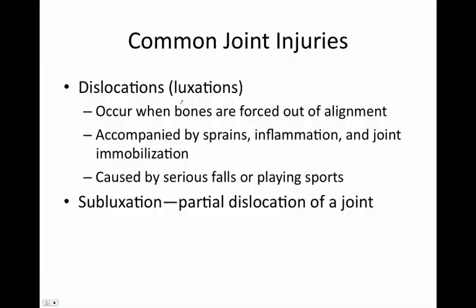Dislocations or luxations occur when bones are forced out of alignment, usually accompanied by sprains, inflammation, and joint immobilization — typically caused by serious falls or playing sports. A subluxation is a partial dislocation of a joint, not considered an entire dislocation but just partially.